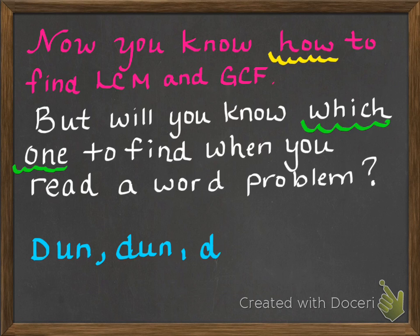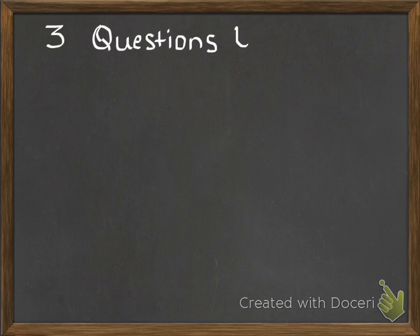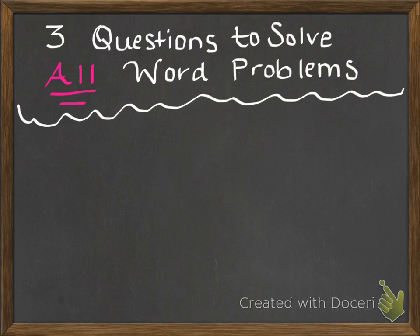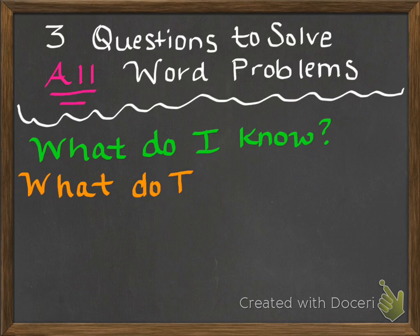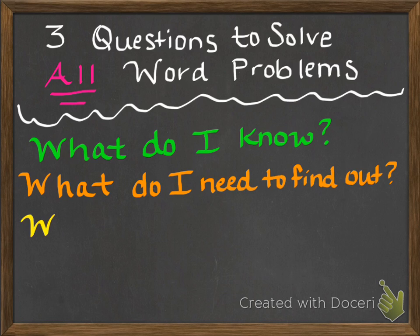So now we're going to look at our problem-solving strategy. We can solve any word problem with three questions. You don't need to be writing any of this down just yet, but the three questions we need to ask ourselves are: What do I know? What do I need to find out? And what is my plan?